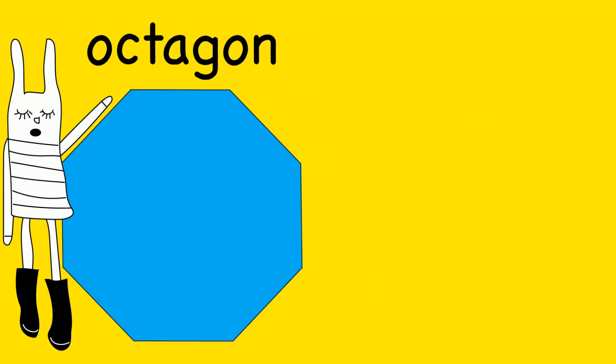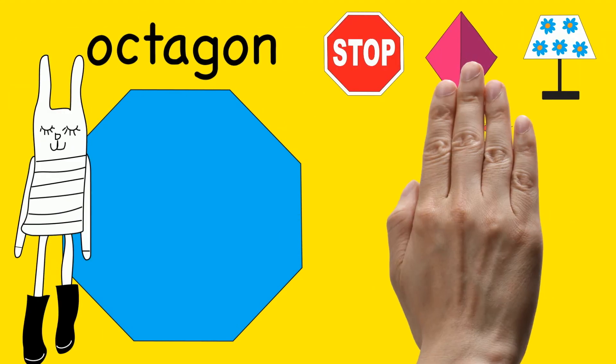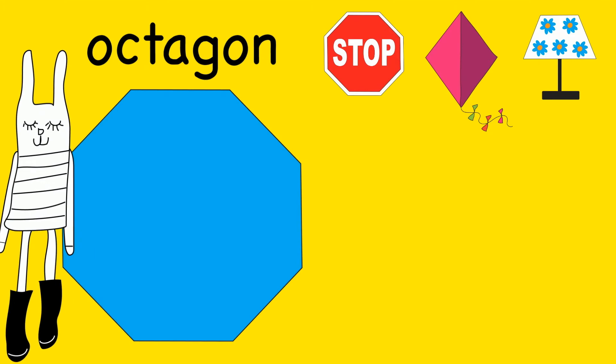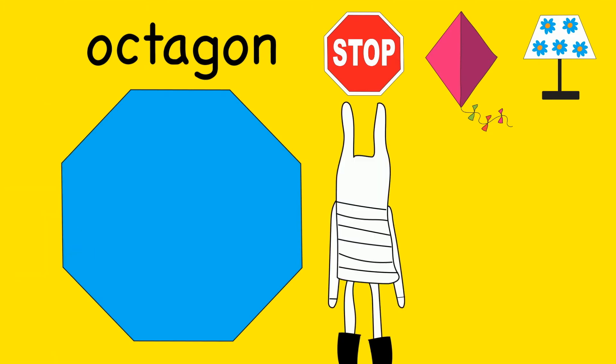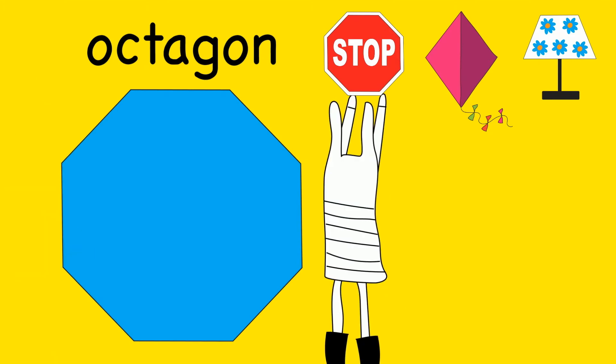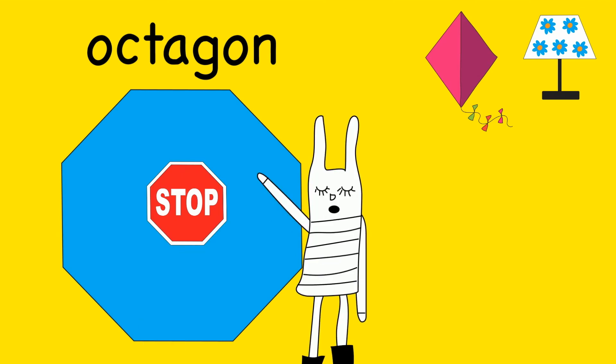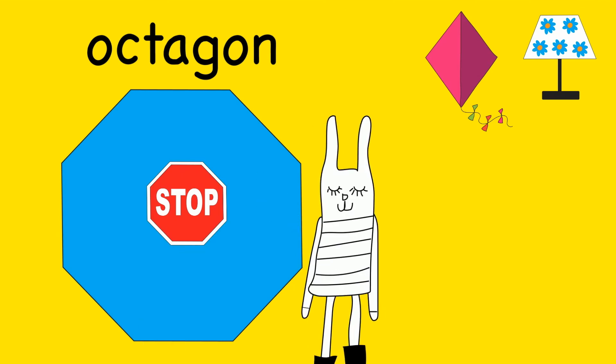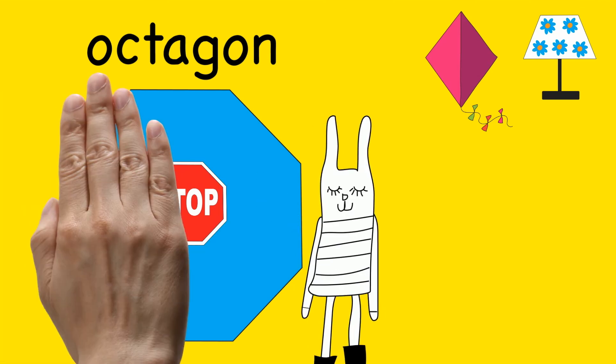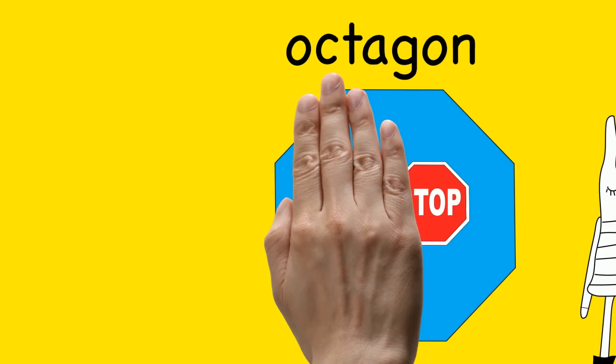I see an octagon. Can you show us the object that is shaped like an octagon? A stop sign is shaped like an octagon. Octagon.